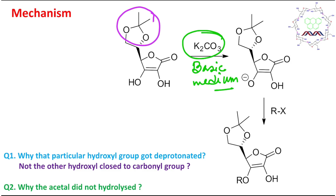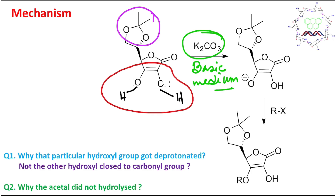There are two hydroxyl groups — this one and this one. The question is which one will react. Apparently both look similar because both can be considered as enols. I have already discussed many lectures on enol, enolate, and silyl enol ethers for such molecules. So this is actually an enol.